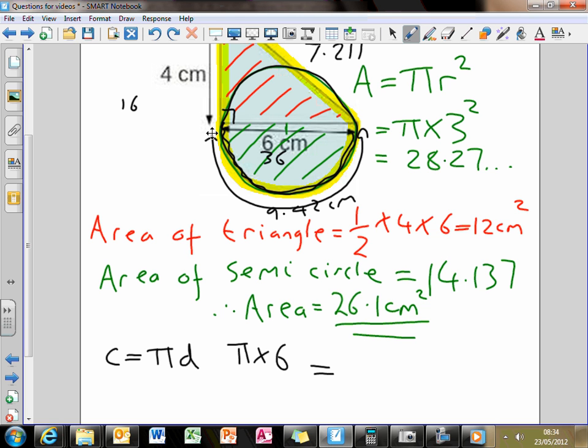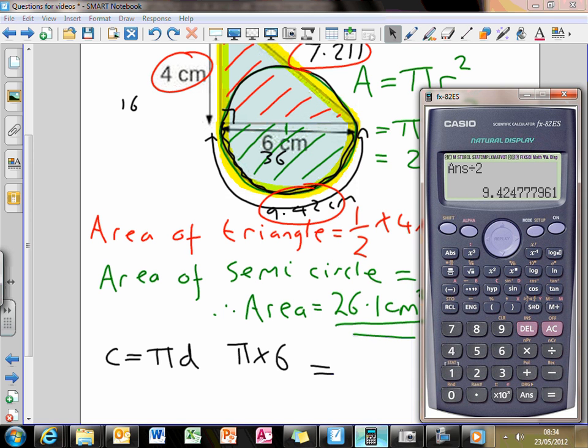So therefore, the perimeter is going to be this number, plus this number, plus this number here. So let's add them together, okay? So, right,